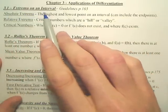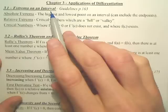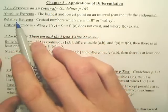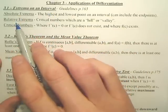Section 3.1, extrema on an interval. You have two types of extrema, absolute and relative.